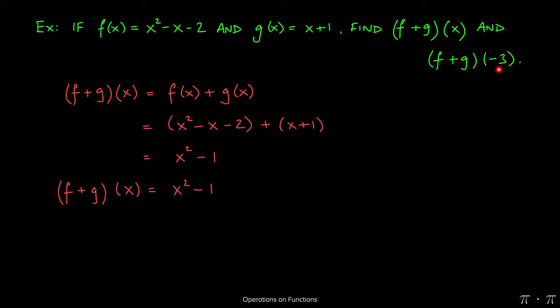All I need to do is evaluate the function, which we did in the previous section, at negative 3. In order to do that, I have to replace all the x's in my function with this input. So negative 3 gets plugged in here.